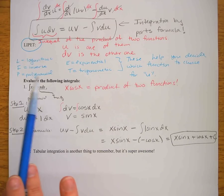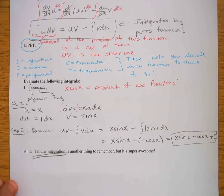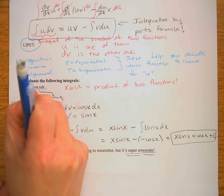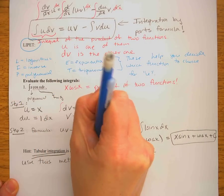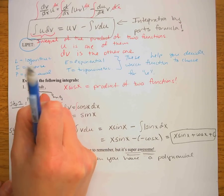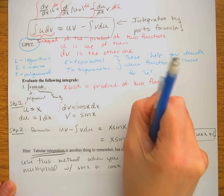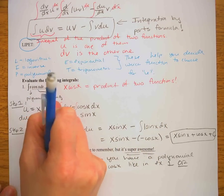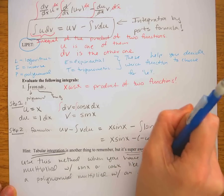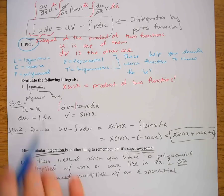When you have a higher-degree polynomial, we use a method called tabular integration. You use this method when you have a polynomial multiplied by a sine or cosine, or a polynomial multiplied by an exponential. It's one more thing to remember, but it saves enormous time in the long run.